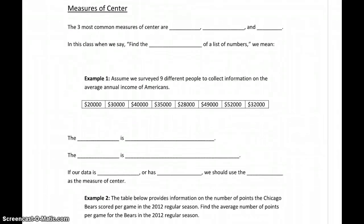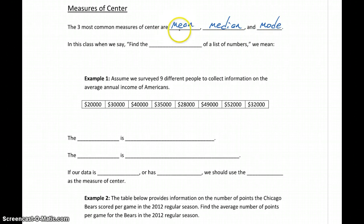So we'll start off with measures of center. The three most common measures, which you've probably seen in courses before, are mean, median, and mode. To get the mean of a data set, we add up all of the numbers and divide by the number of numbers in that data set. To get the median, we arrange all of the numbers from smallest to largest and find the number in the middle. And the mode is just the number that occurs most frequently.